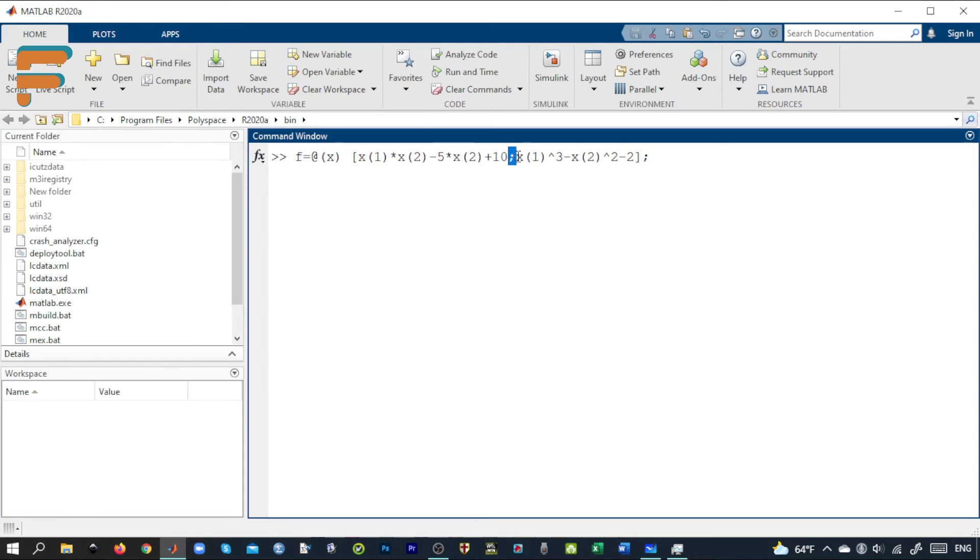That's it, we've defined the function. If we provide some values, for example 1 for x1 and 3 for x2, we get these results.